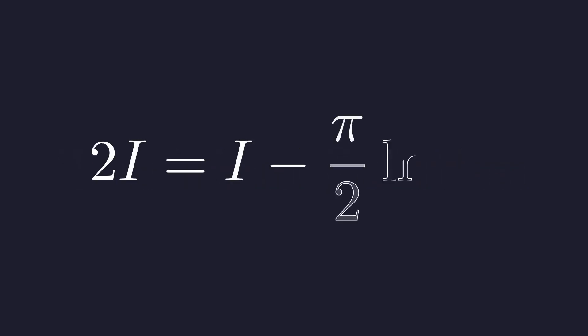Now we have all the pieces. Let's assemble the final answer. We return to our main equation and replace the complicated integral with our simplified result, i. Now it's just a matter of simple algebra.